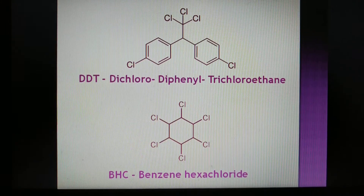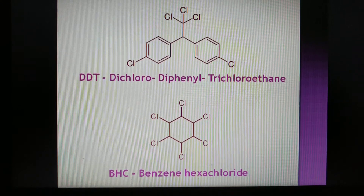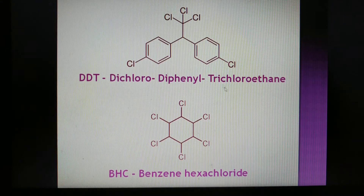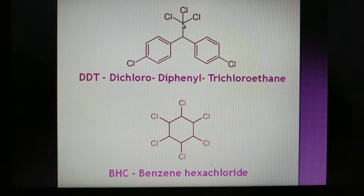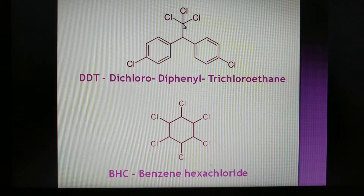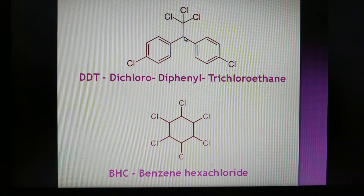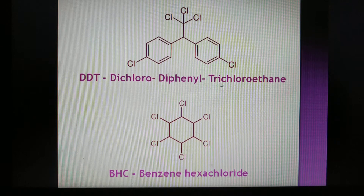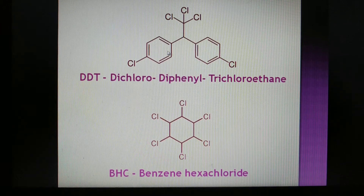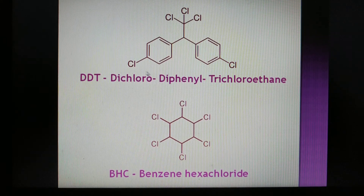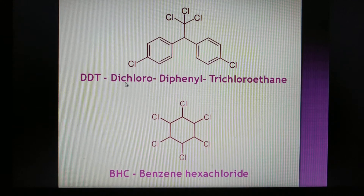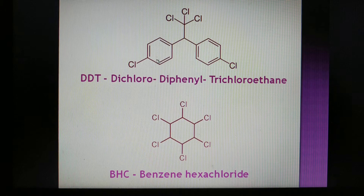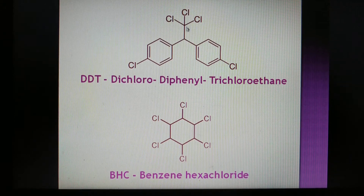A common exam question asks for the full form and structure of DDT and BHC. DDT stands for Dichlorodiphenyl Trichloroethane. In its structure, there are two carbons with a single bond — that gives ethane. Three chlorines are attached to one carbon — making it trichloro — and two phenyl rings each with two chlorines are attached to the other carbon — making it dichloro-diphenyl. So the full name: dichlorodiphenyl trichloroethane.